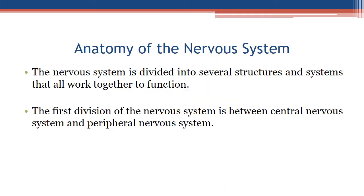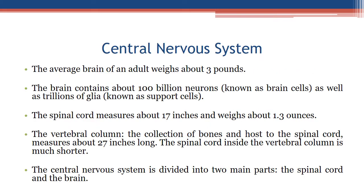Anatomy of the nervous system: the nervous system is divided into several structures and systems that all work together to function. The first division of the nervous system is between the central nervous system and the peripheral nervous system.